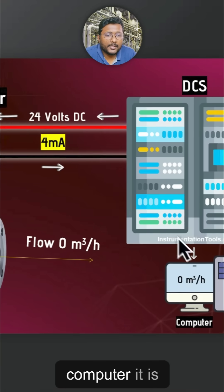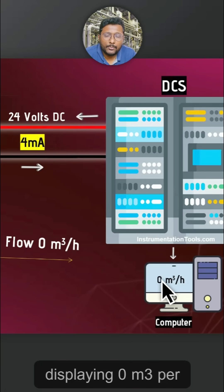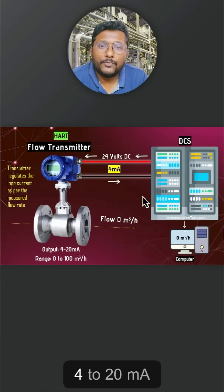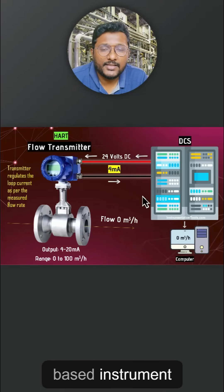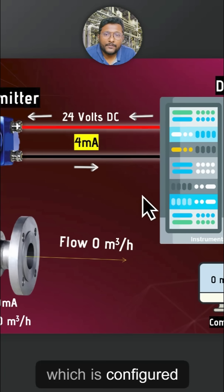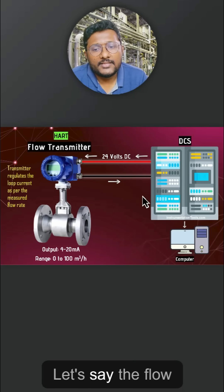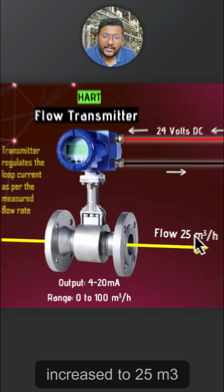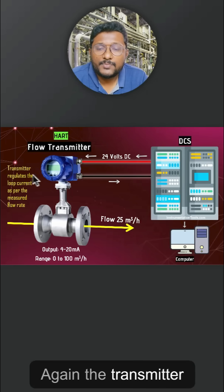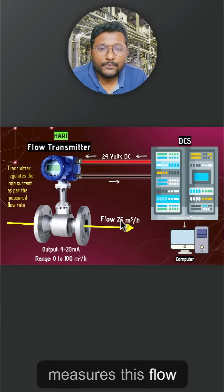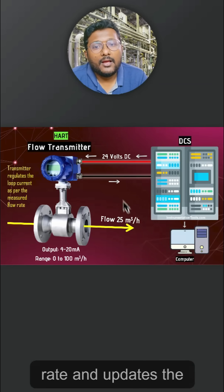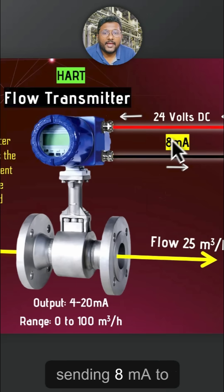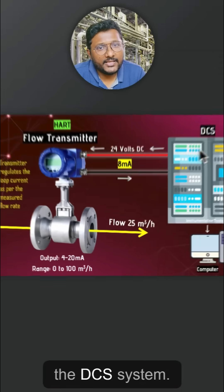The DCS measures this loop current and displays it to the operator, showing 0 m³ per hour on the operator computer. This is the basic concept for a 4 to 20 mA based instrument configured in a DCS system. Now let's say the flow increases to 25 m³ per hour — the transmitter measures this flow rate and updates the loop current accordingly, sending 8 mA to the DCS system.